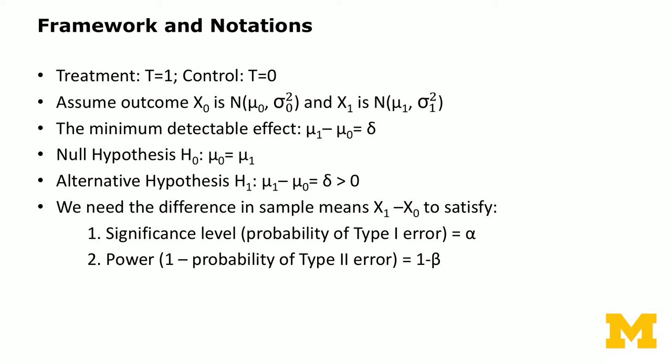We need the difference in sample means, X1 minus X0, to satisfy two conditions. The first is significance level: the probability of making a type 1 error, denoted alpha. The second is power: as the experimenter, you commit ahead of time how large the power should be, which is 1 minus the probability of type 2 error, so 1 minus beta.